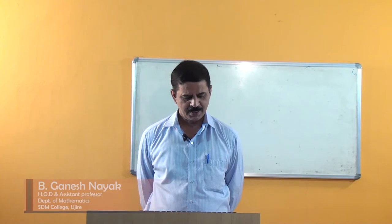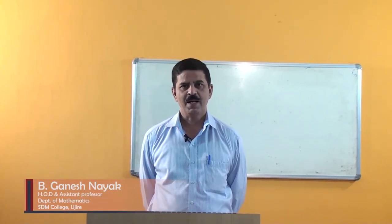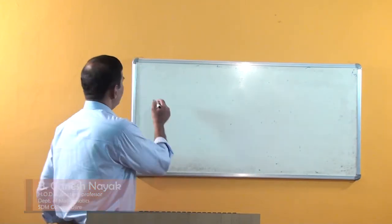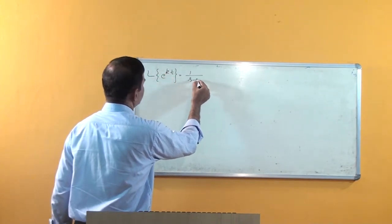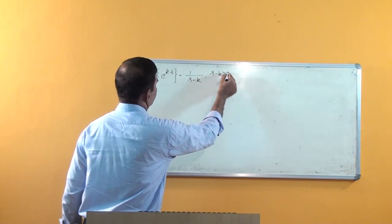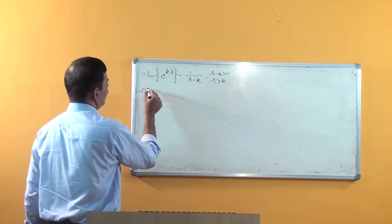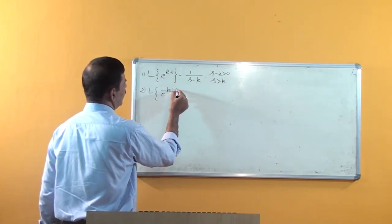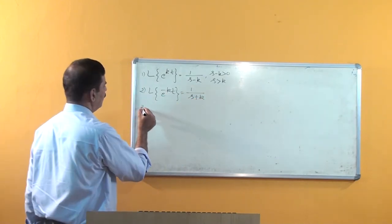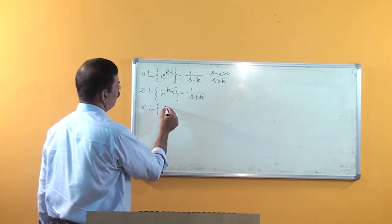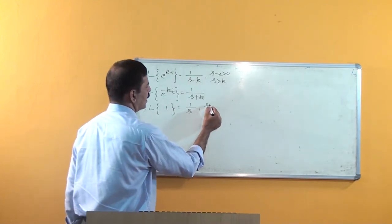Hello friends, today we will continue the Laplace transformation. In the last class we observed that Laplace of e^(kt) is equal to 1/(s - k), where s is greater than k. Second, Laplace of e^(-kt) is equal to 1/(s + k). Another one: Laplace of 1 is 1/s, where s is greater than 0.